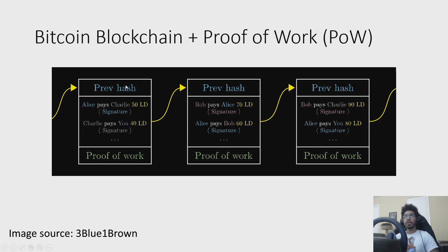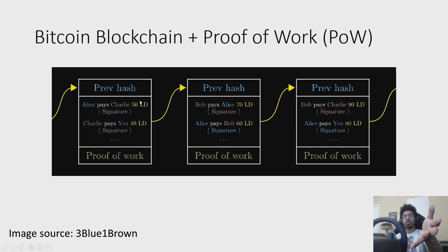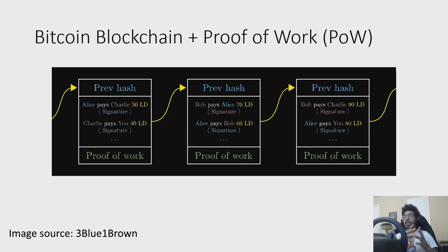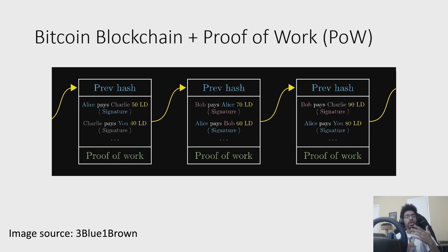The problem is that the hash and the list of transactions by themselves is not enough to solve the double-spend problem. Because imagine Alice, being a malicious actor — she pays Charlie 50 Bitcoin and sends him that block. But then, in another block that's also otherwise valid, she makes no transactions, so she still has 50 Bitcoin. Which one wins? That's the issue. That's the double-spend problem.